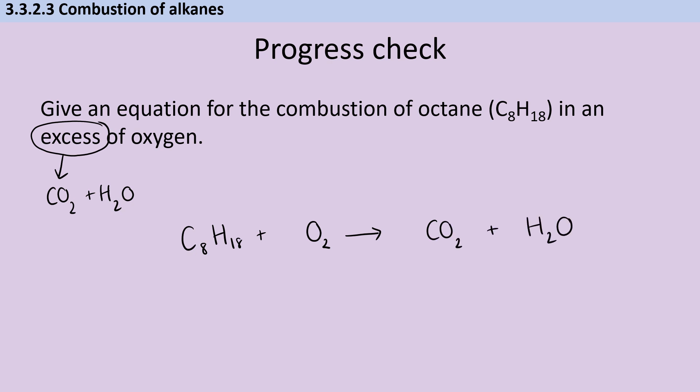So we can start off with an unbalanced equation like this and then we look at the number of carbons in the octane. Therefore we can say there are going to be eight carbon dioxide molecules. Then likewise, we look at the number of hydrogens in the octane and we can see that we're going to need nine water molecules because each one has two hydrogens in it. So that's 18 in total.